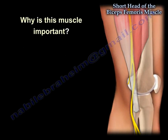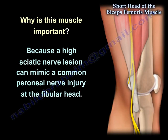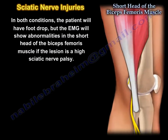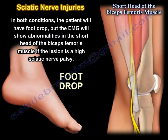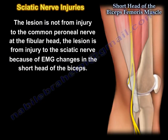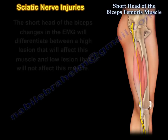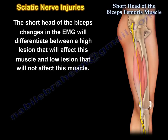So why is this muscle important? Because a high sciatic nerve lesion can mimic a common peroneal nerve injury at the fibular head. In both conditions, the patient will have foot drop. However, EMG will show abnormalities in the short head of the biceps femoris if the lesion is a high sciatic nerve palsy — not an injury to the common peroneal nerve at the fibular head. EMG changes in the short head of the biceps differentiate between a high lesion affecting this muscle and a low lesion at the fibular head that will not affect this muscle.